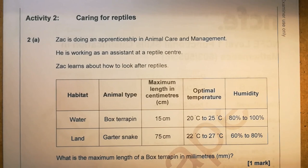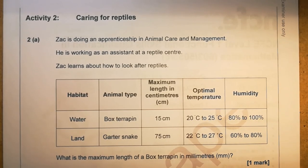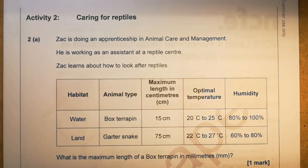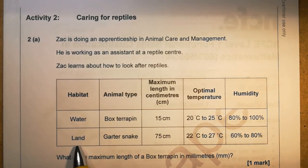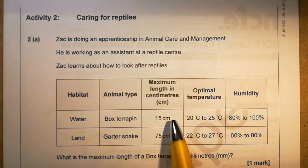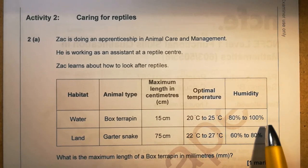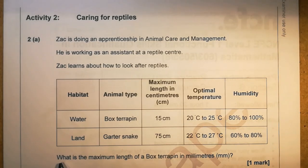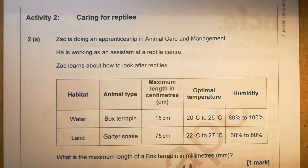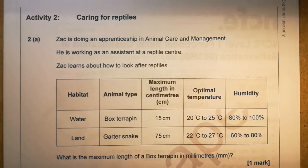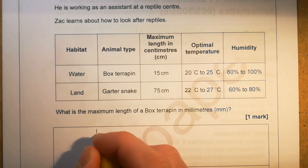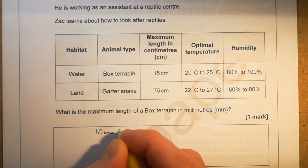Activity two: caring for reptiles. Zach is doing an apprenticeship in animal care and management, working as an assistant at a reptile centre. We have a table with habitat, animal type, maximum length, optimal temperatures, and humidity. Question: what is the maximum length of a box terrapin in millimetres? The table shows 15 centimetres. Since there are 10mm in 1cm, 15 × 10 = 150 millimetres.